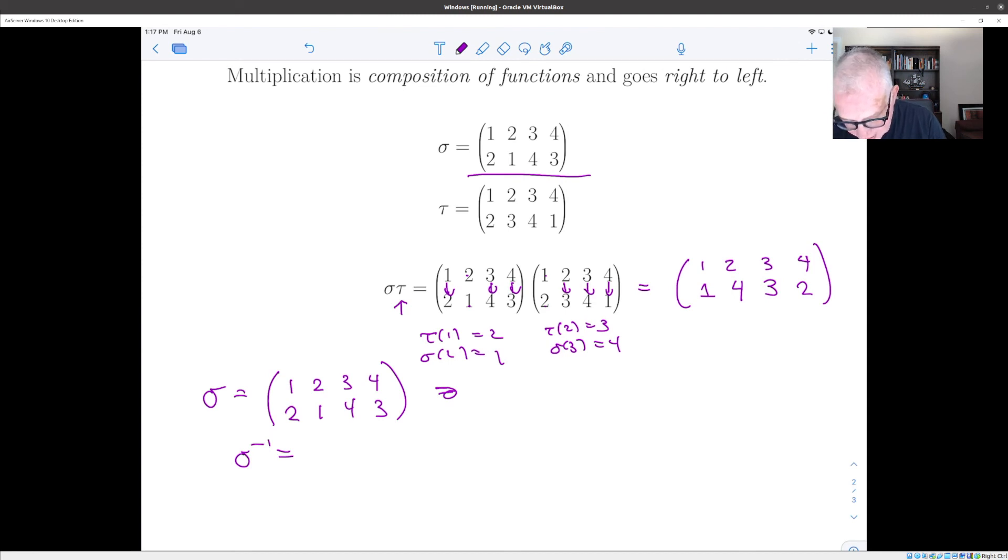So the inverse, the way you figure it out is you look, if sigma takes two to one, then sigma inverse takes one to two. If sigma takes one to two, then sigma inverse takes two to one. If sigma takes three to four, then sigma inverse takes four to three. And if sigma takes four to three, then sigma inverse takes three to four. And actually, one way to work that out would be to take just to flip the rows and write it as two, one, four, three, one, two, three, four, and then sort the upper row into order.